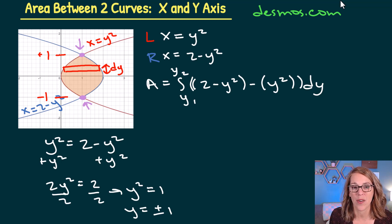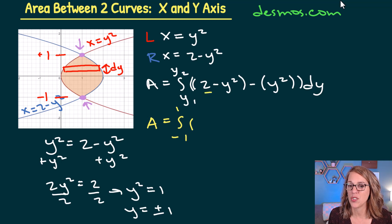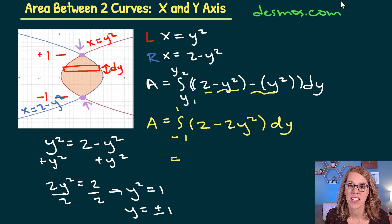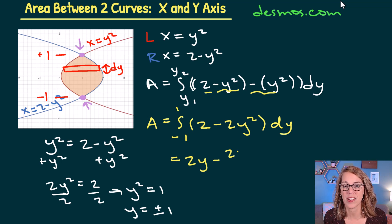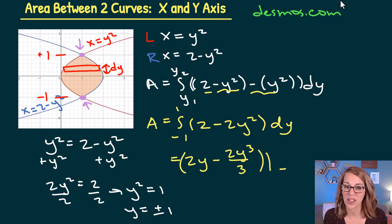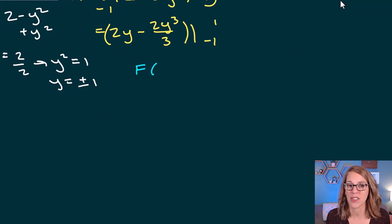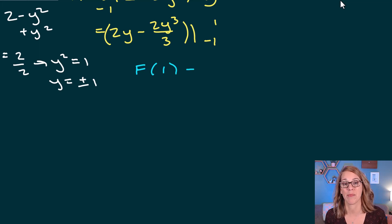Putting it all together, I'm integrating from negative 1 to 1. Inside the integral, I combine like terms: 2 minus y squared minus y squared becomes 2 minus 2y squared, dy. Using the power rule: the integral of 2 is 2y, and the integral of 2y squared gives 2y cubed divided by 3. I'll evaluate this from negative 1 to 1 using the Fundamental Theorem of Calculus Part 2 — taking the antiderivative at 1 minus the antiderivative at negative 1.